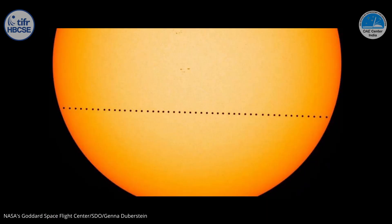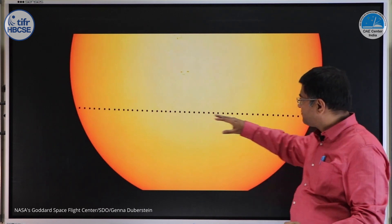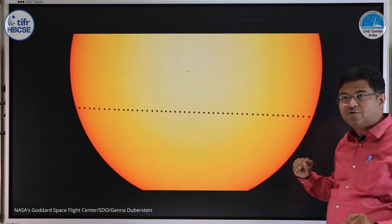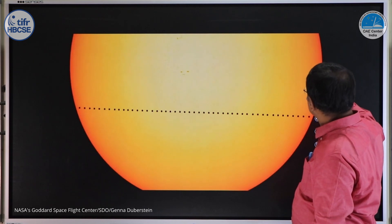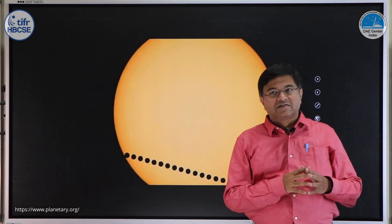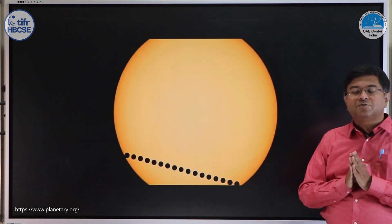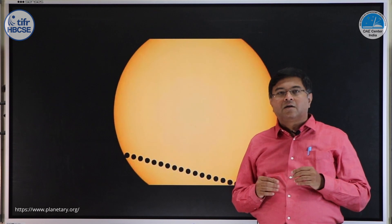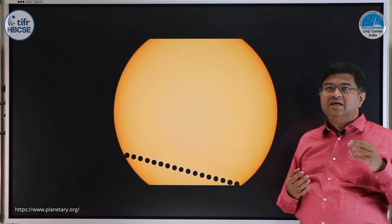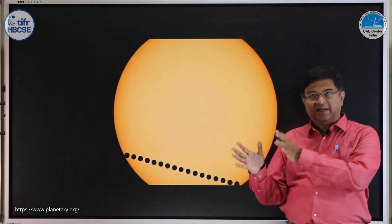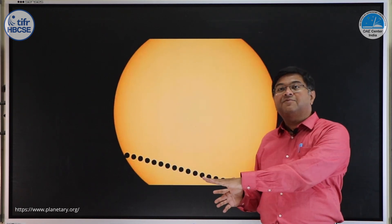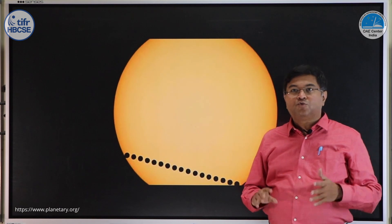Here is an example of transit of Mercury. We can see Mercury moving as a black dot on the solar disk. This is a photograph taken with multiple exposures. You can see the path of Mercury. Similar to Mercury, you will also see transit of Venus, but less often. Mercury transits you will see every couple of years, but Venus transits you will only see twice every hundred years. One Venus transit is kind of special.